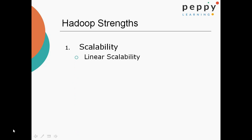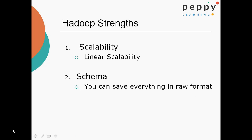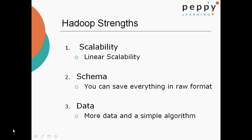Strengths of Hadoop. Scalability — linear scalability: when you add multiple nodes to a cluster, the cluster capacity increases proportionately. Schema: you can save everything in raw format. For example, in SQL tables you first have to define a schema, but in Hadoop you need not have a schema — you can store data in HDFS in raw format. Data: in Hadoop you have a huge amount of data and you write a simple algorithm to process it. Instead of bringing the data to the process, you send the process to where the data is located.